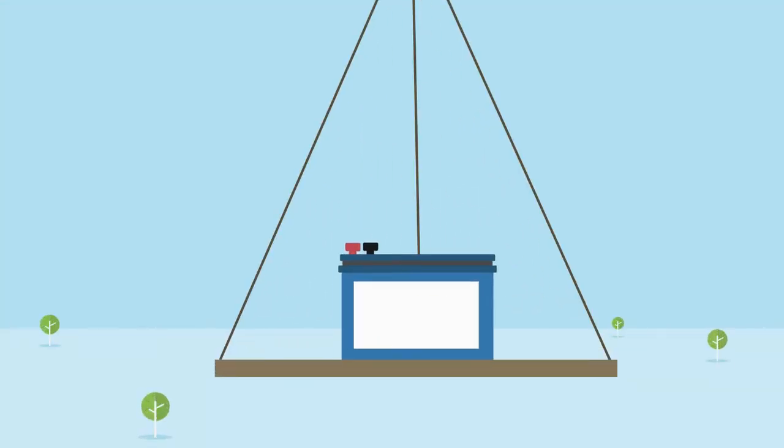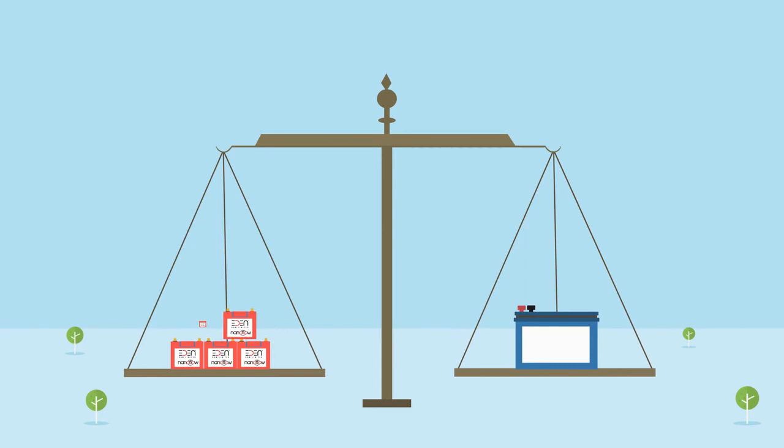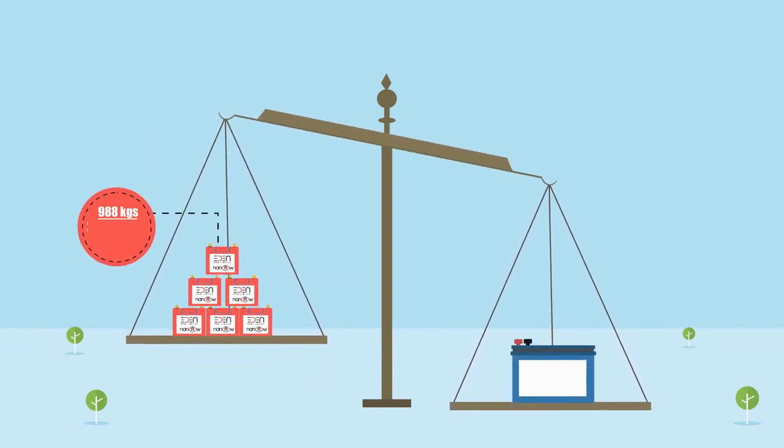By comparison, the battery in a Tesla S weighs 1,000 kg, or about 2,200 lbs. Six Eden NanoFlow batteries could do the same job as the current Tesla battery and would weigh just 12 kg, a weight saving of 988 kg, or 2,178 lbs.